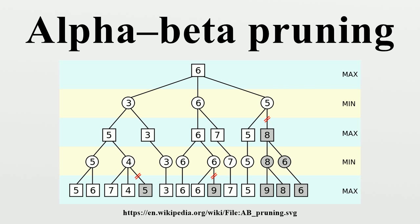History: Alan Newell and Herbert A. Simon, who used what John McCarthy calls an approximation in 1958, wrote that alpha-beta appears to have been reinvented a number of times. Arthur Samuel had an early version, and Richards, Hart, Levenham, and Edwards found alpha-beta independently in the United States.